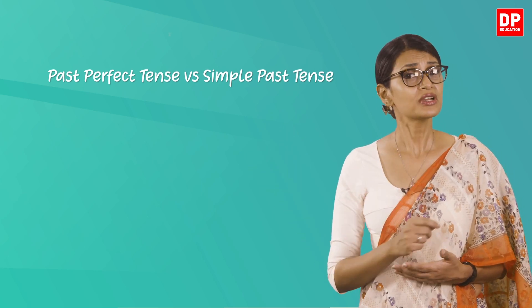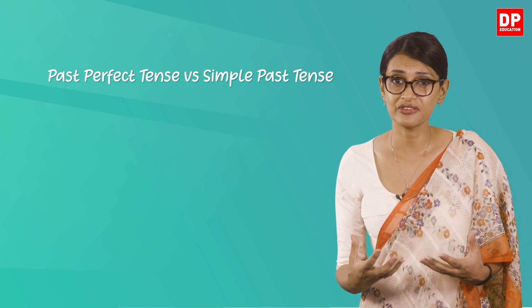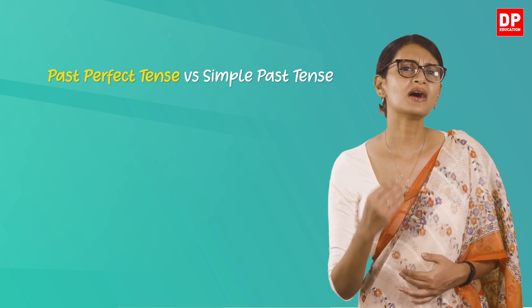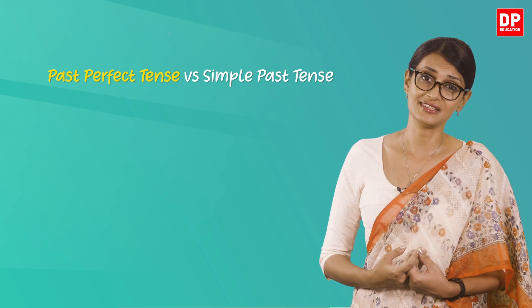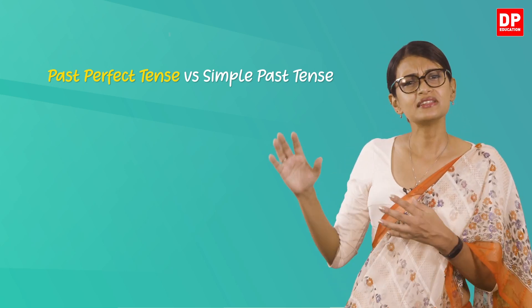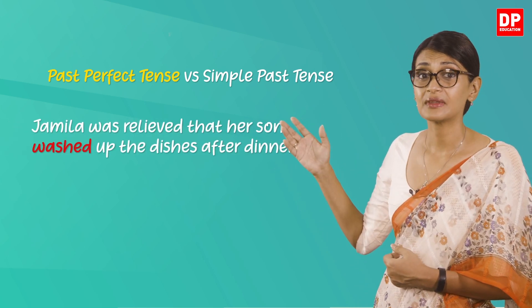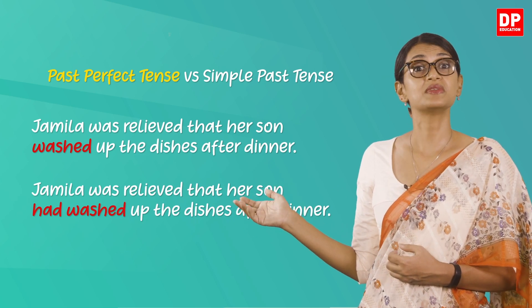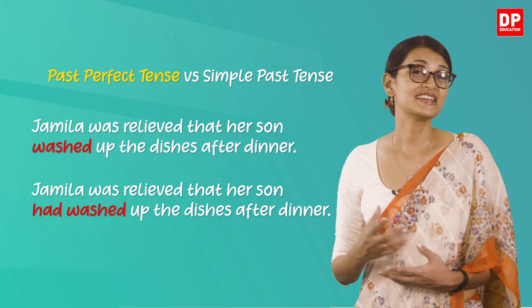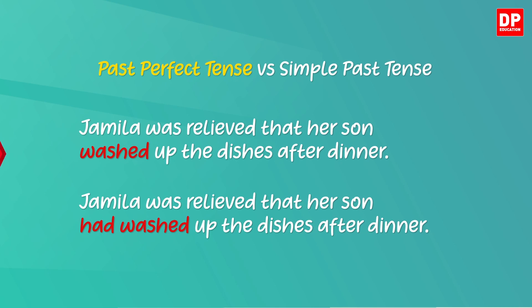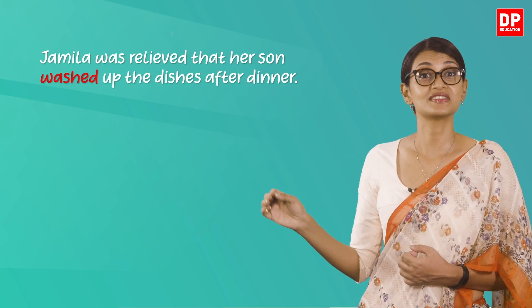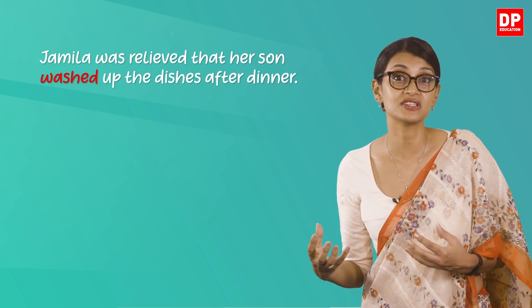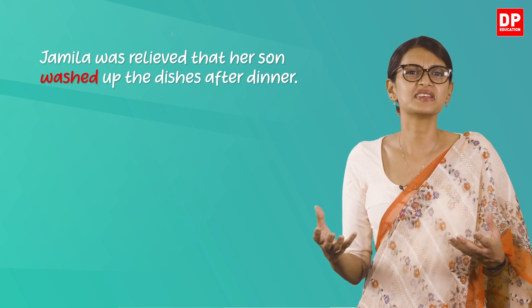What is the difference between the past perfect tense and the simple past? When you are talking about some point in the past and want to make reference to an event that happened even earlier, using the past perfect helps you convey the sequence of events — it is clear and specific. For example, consider this sentence using the simple past: 'Jamila was relieved that her son washed up the dishes after dinner.' This suggests that washing up the dishes was a habit that possibly took place a couple of times in the past.